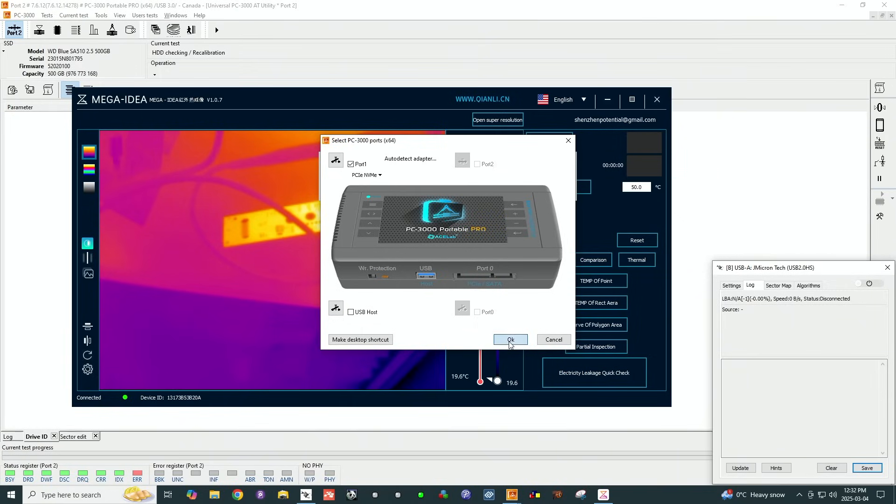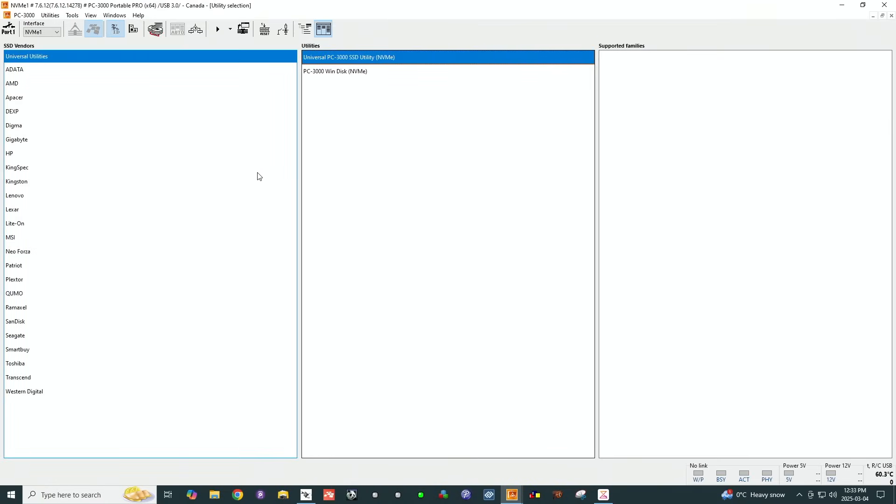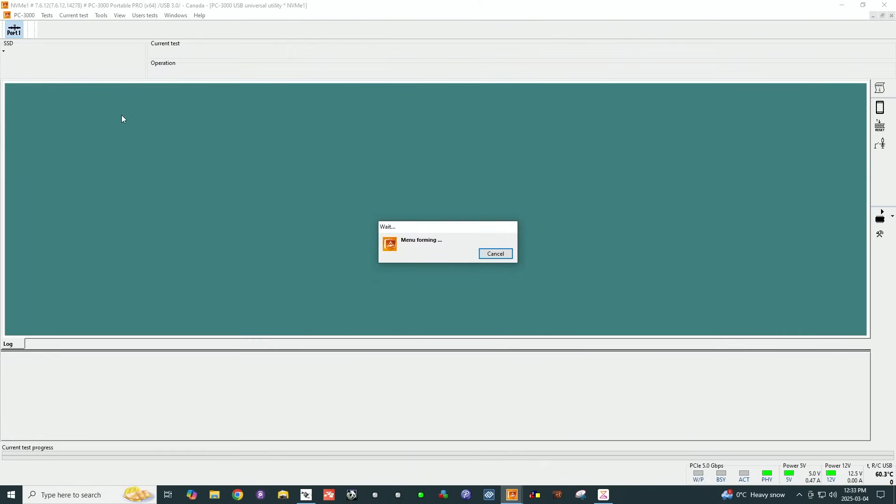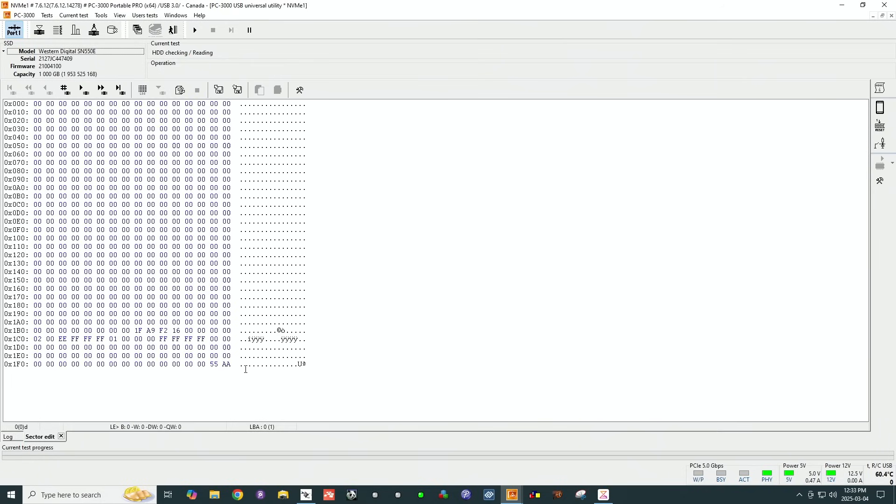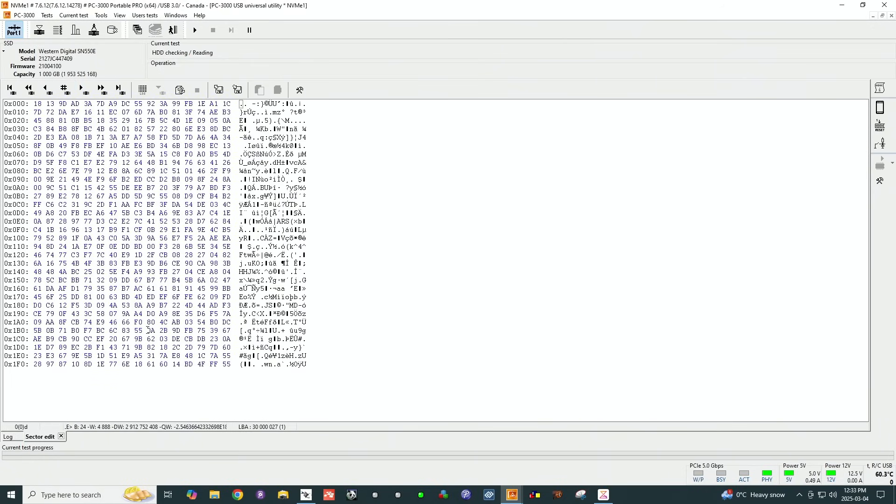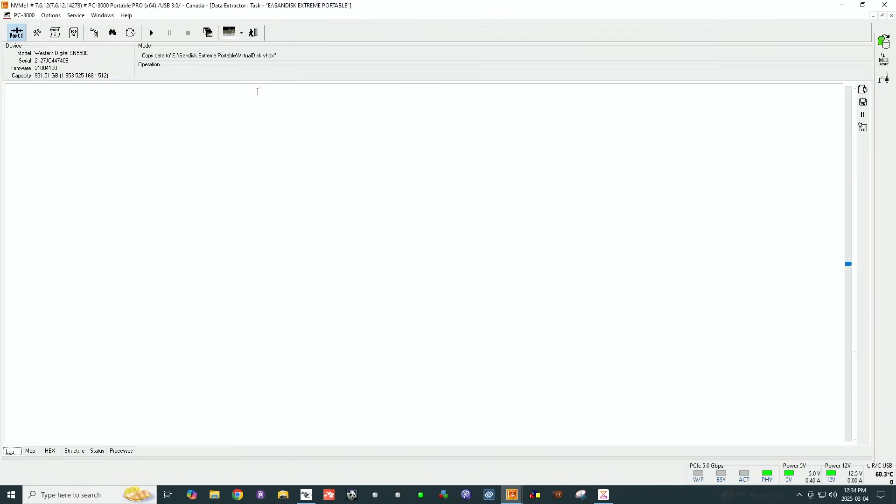Data Extractor detects PCI Express NVMe. Power up our unit, the PHY light comes on. If we go into Universal Utility, we see the Passport Western Digital SN550E. There's a serial number, and when we go to sector edit, we have access to the data. That's the very first sector.